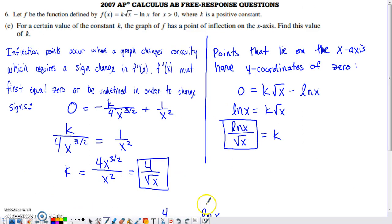And then the last part of this, this is the part where the algebra gets kind of messy. Basically, you're told that for a certain value of k, the graph has a point of inflection on the x-axis. Find this value of k. So from this sentence, point of inflection on the x-axis, we can hopefully reason out two things need to be happening.